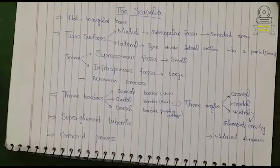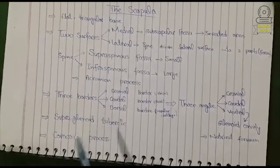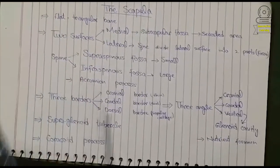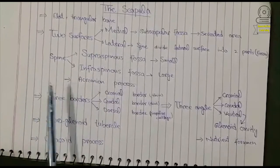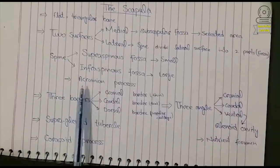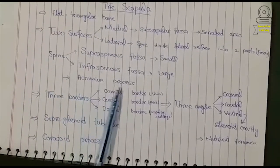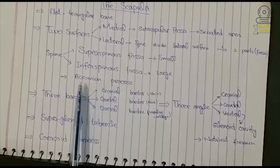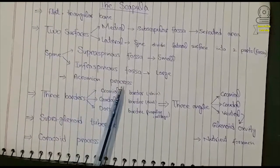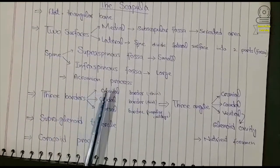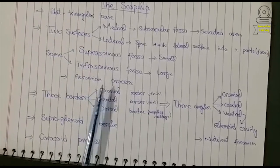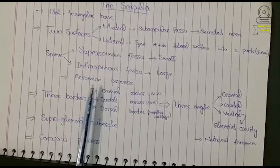On the distal end of the spine, there is a process called the acromion process. The acromion process is bent toward the cranial cavity.